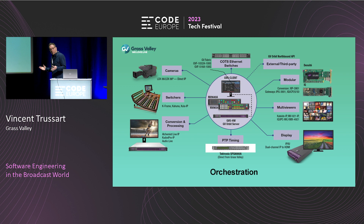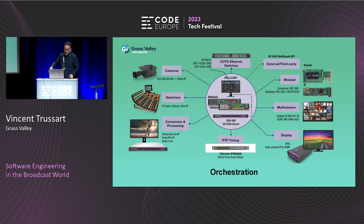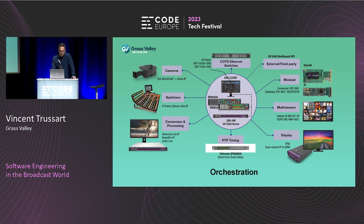When you have all these components in your system, you need to orchestrate everything — control it, configure it, move your flows around. If you have thousands of flows coming in and dozens going out, you have to make sure your signal flow and the configuration of every device is correct. We also have a solution to orchestrate all the devices in a broadcast facility.